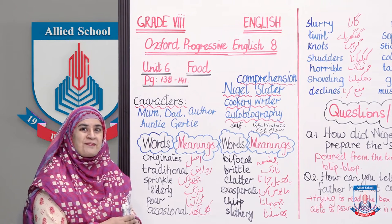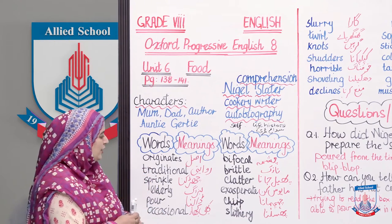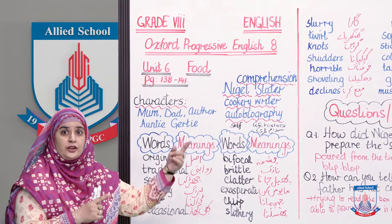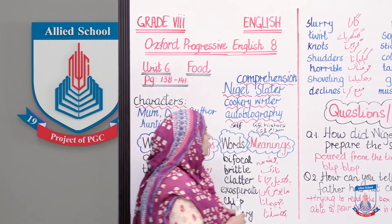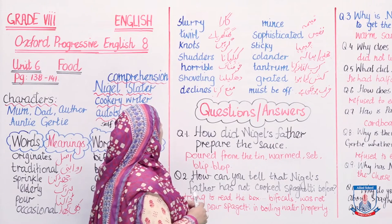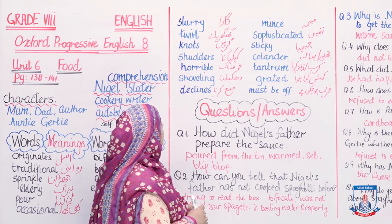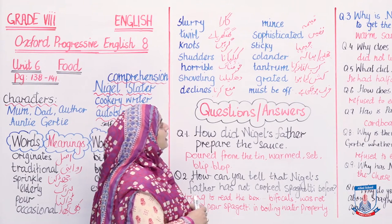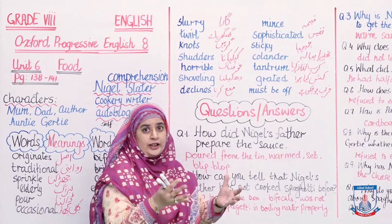Kis story mein? Harry Potter mein. My favourite. I hope it is yours as well. So slithering is phisalna. Let us move on to the next word. Slurry - gara. Mince - keema. Curly - ghungrialay. Sophisticated - nafis. Knots - girhe. Sticky - chip chipa. Shudders - kap kapana. Colander is actually a chhanni. Wo jo piyala hota hai chhanni jaisa.